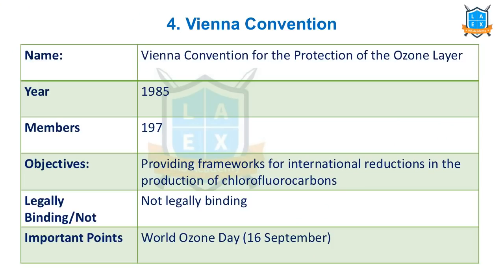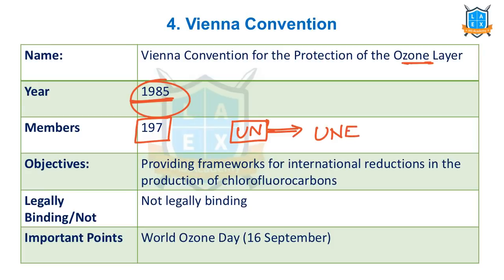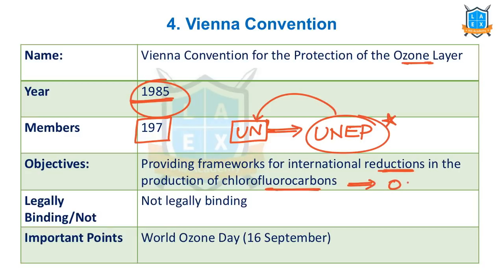The next important convention is the Vienna Convention for the protection of the ozone layer. This is effective from 1985. All 197 UN member countries are members. Most of the conventions we are discussing are part of UNEP — United Nations Environment Programme — a specific body under the United Nations which oversees environmental protection around the world. The Vienna Convention provides the international framework for the reduction in the production of chlorofluorocarbons — ozone depleting substances (ODS). It is not legally binding.